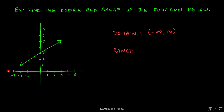That's to say that any x value from negative infinity to positive infinity has a corresponding y value. For the range, we're looking at the y values. The range is also negative infinity to infinity because this function decreases all the way down to negative infinity and increases all the way to positive infinity — we're looking at which y values are hit by the function.